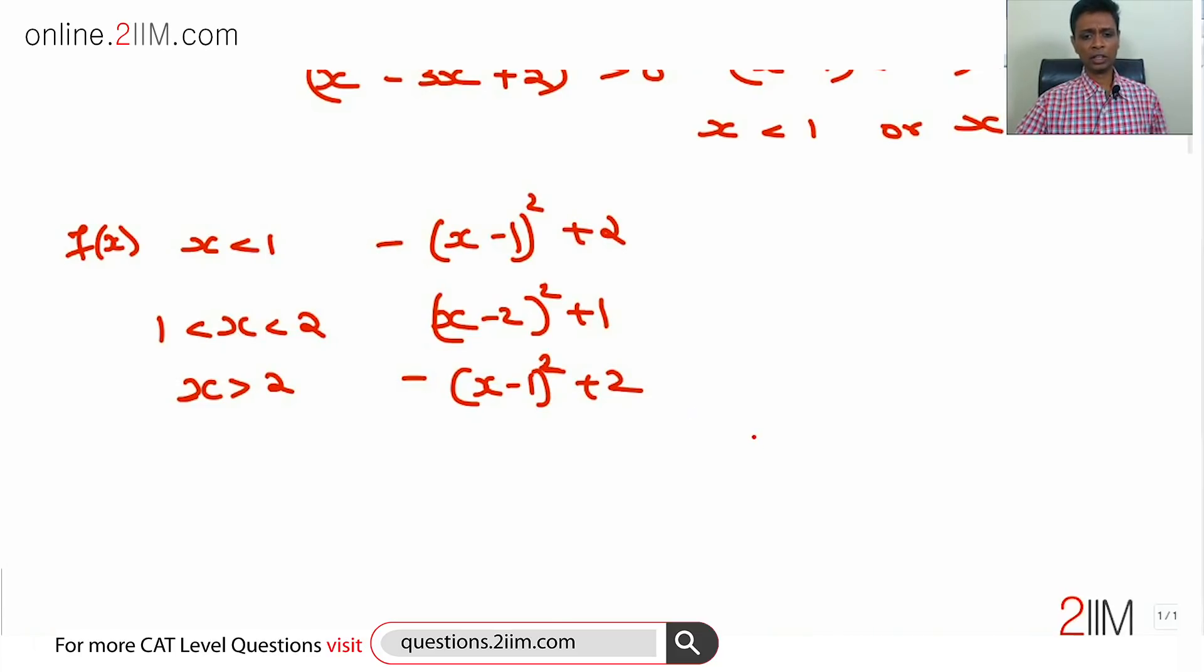Now, let us keep this simple. Let us solve for when will each of this be maximum. If you look at this expression, -(x-1)² + 2, this is a square. The square cannot be negative. So -(x-1)² will always be negative. The minimum value that can take will derive the maximum value for f(x), or the maximum value possible for f(x) is when x is equal to 1, in which case f(x) will be equal to 2.